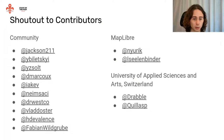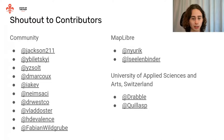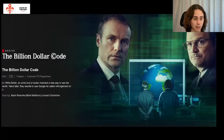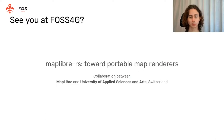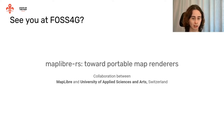A big shout out to the contributors — there have been contributions from the general community, the MapLibre team, and the University of Applied Sciences and Arts. A quick recommendation: if you haven't seen it, 'The Billion Dollar Code' is a mini-series about a patent infringement between TerraVision and Google Earth, with quite accurate technical details. If you're interested in map rendering it's definitely worth a watch. At FOSS4G we will also present a paper covering the state of the art of portable map renderers, a collaboration between MapLibre and the University of Applied Sciences and Arts.